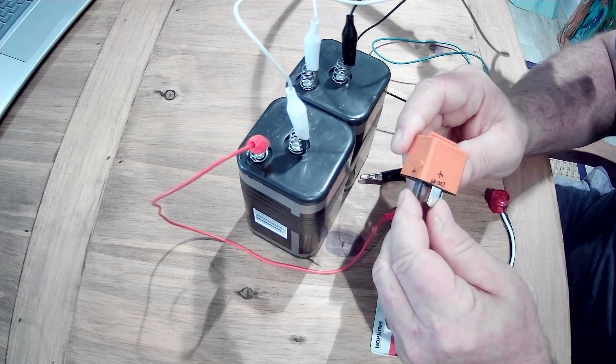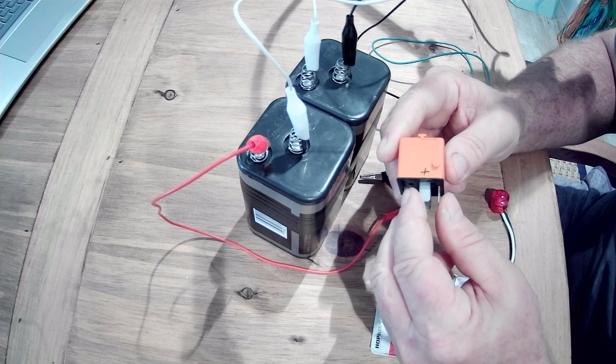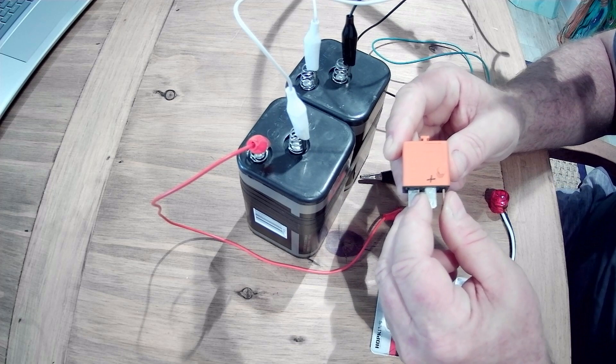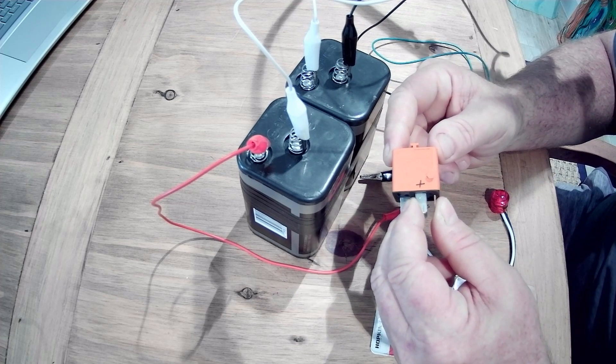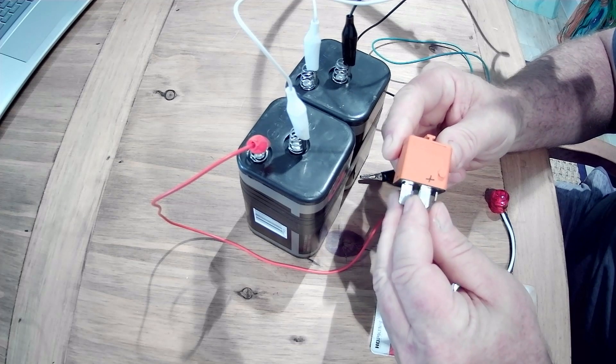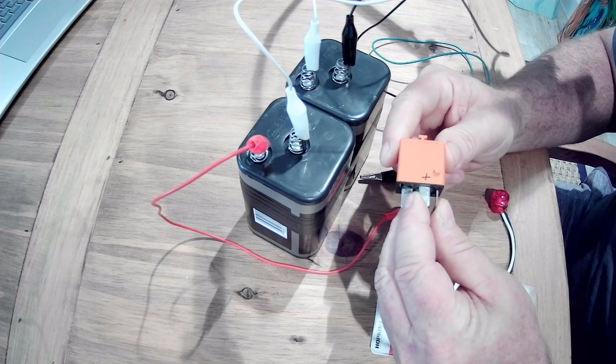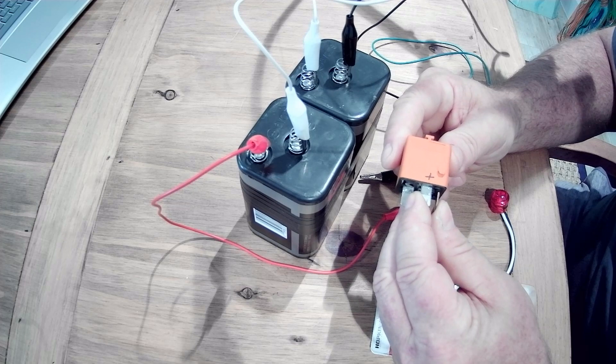So a relay is basically just a switch. It's like a light switch. When you want to turn the lights on in a room, you use your finger to push the switch up. The current goes through the switch to the light and illuminates the bulb. A relay is basically the same thing, but instead of using your finger to switch it, it uses electrical current.